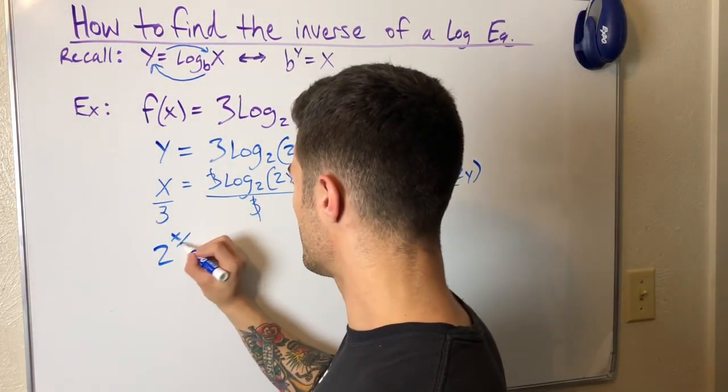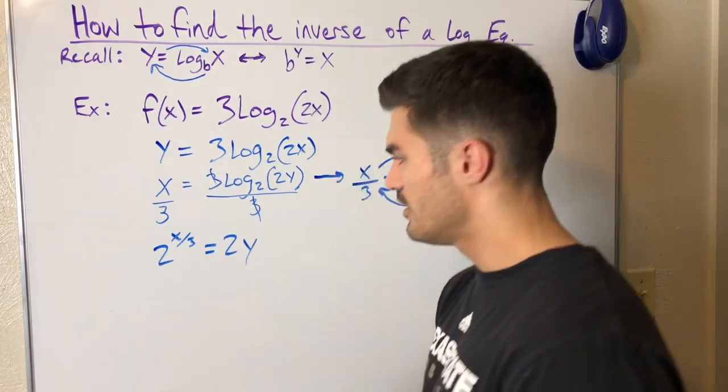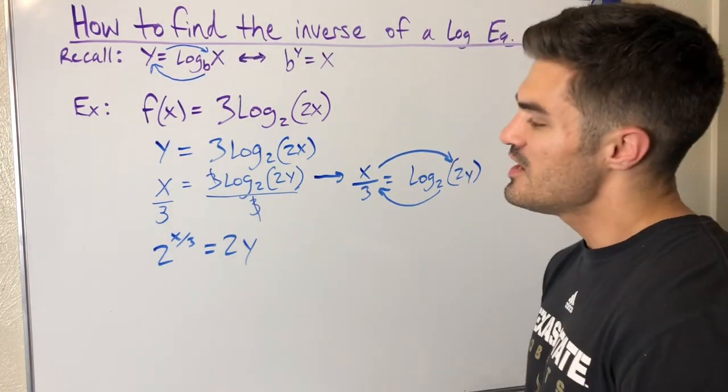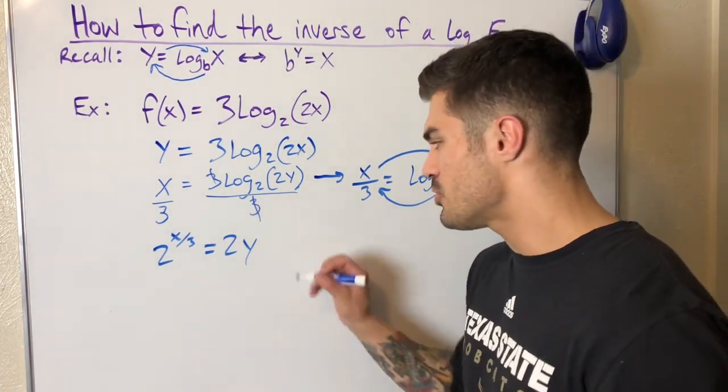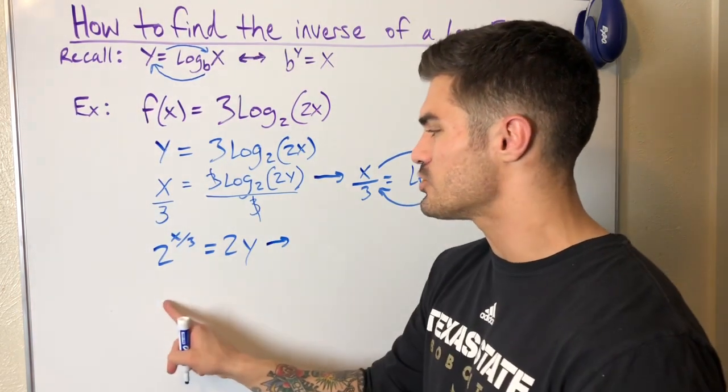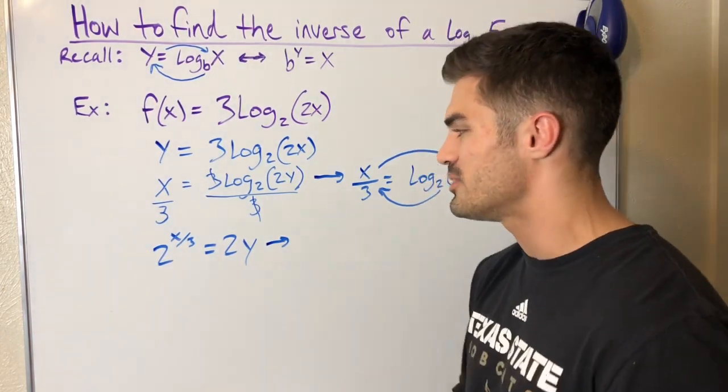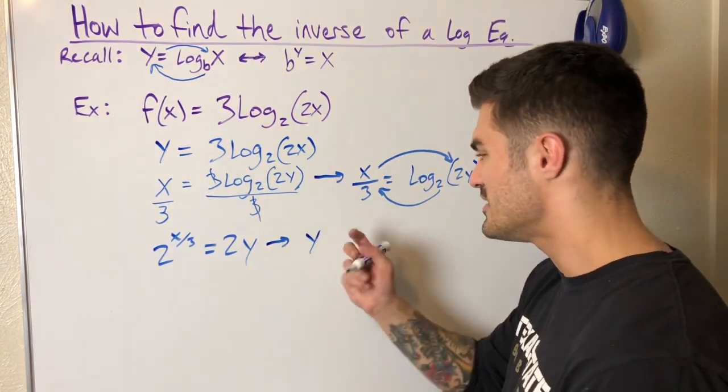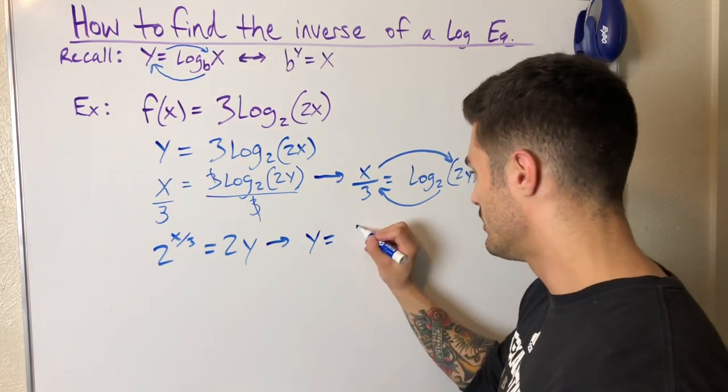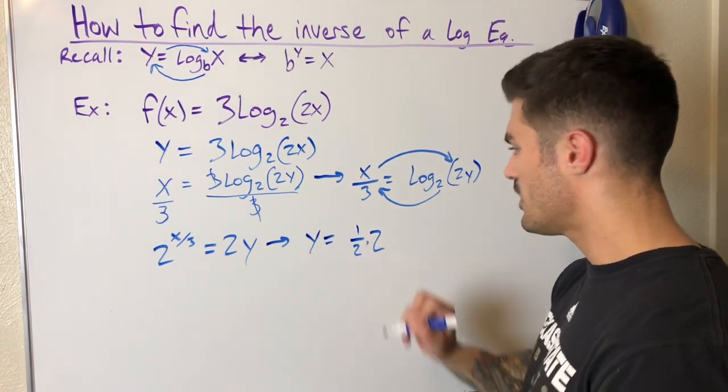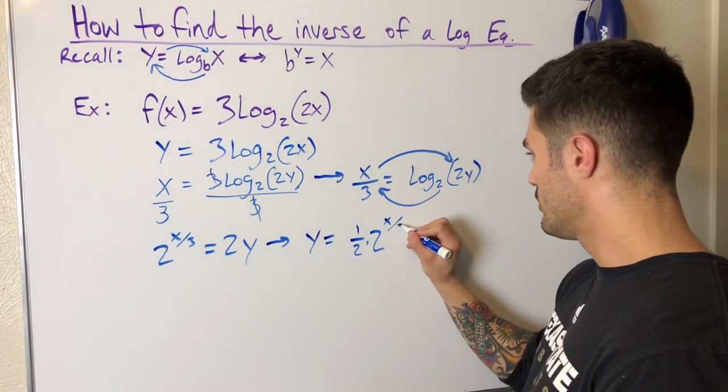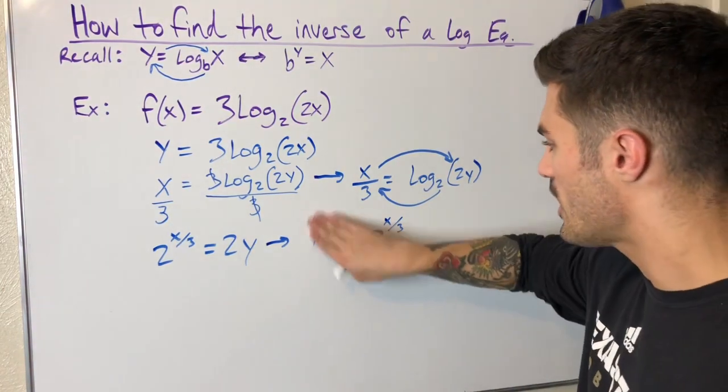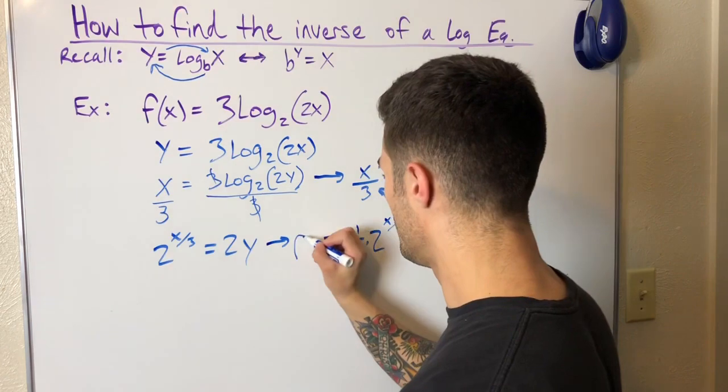Now I can just simply divide both sides by 2, but I'm actually going to multiply both sides by one-half—same thing. The reason I'm doing that is because when I have something like this, instead of writing this over 2, I'd rather see a one-half out here being multiplied. That's the general form, like c times a to the x. So one-half times 2 raised to the x over 3 power. Now I can just replace this y with my inverse notation, saying that this is the inverse.